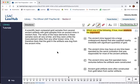A scientific team compared gold samples from several ancient artifacts with gold samples from an ancient mine in western Asia. Okay, so we're comparing these samples to these samples. The ratios of the trace elements in these samples were all very similar, and they were unlike the trace element ratios from any other known mine.